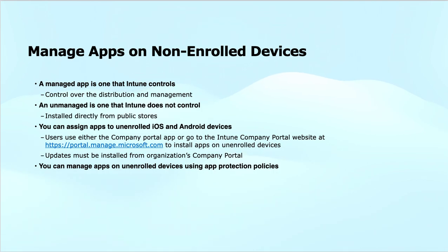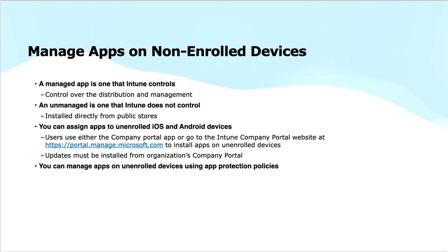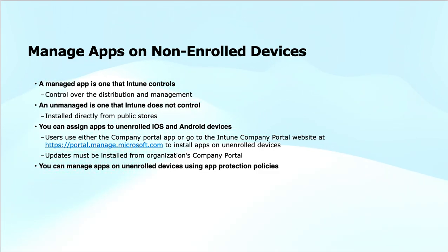We call them unmanaged apps. You can assign apps to iOS and Android devices that are not enrolled in Intune. Users can use the Company Portal app or visit the portal website at portal.manage.microsoft.com to install these apps on unenrolled devices. Updates for applications on unenrolled devices must also be installed through the Company Portal, ensuring the app stays up to date and secure.